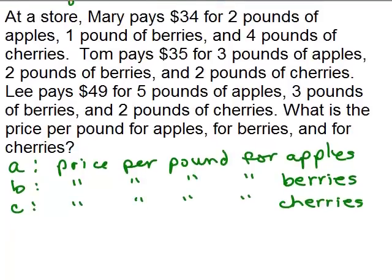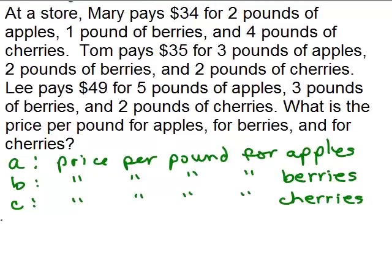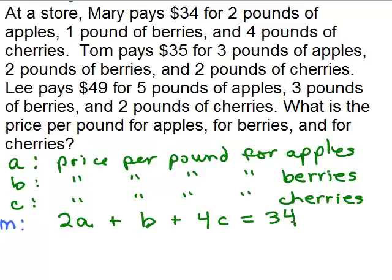So for the apples Mary is paying 2A. Then she has 1 pound of berries, so plus B — or 1 times B. And she also bought 4 pounds of cherries; each pound costs C, so 4 pounds would cost 4C. And altogether that was $34. See if you can write an equation for Tom and for Lee based on what each of them pays — try putting the video on pause and trying that on your own first.